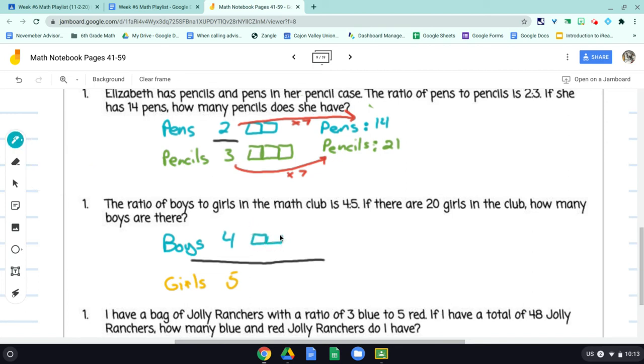4 pieces of tape representing the 4 boys. And then girls will do 5 pieces representing the 5 girls. Okay, not exactly to scale, but you can tell there are more girls than boys, I think. And if there are 20 girls there, well, how many boys would there be then?